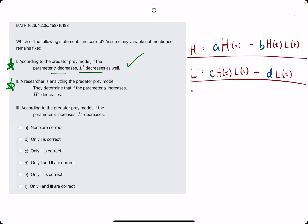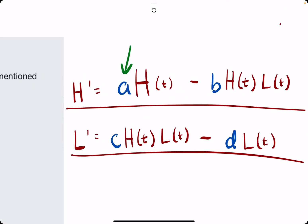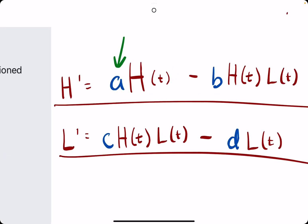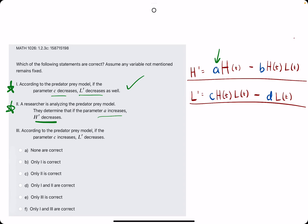Number 2. A researcher's analyzing, they determined that if A increases, then H' decreases. So, this is sort of the opposite scenario. If A is increasing, then really the overall value here, or H' should increase. However, they're claiming the opposite. So, that cannot be true.